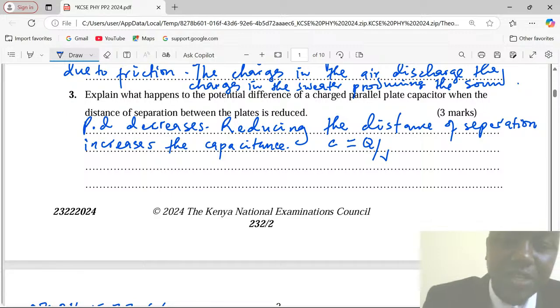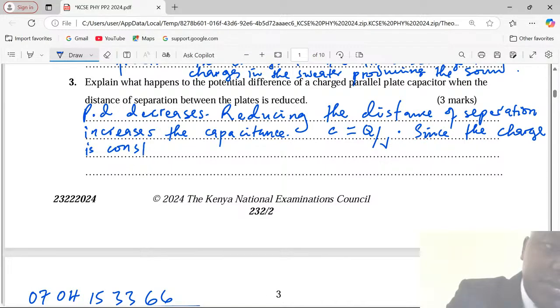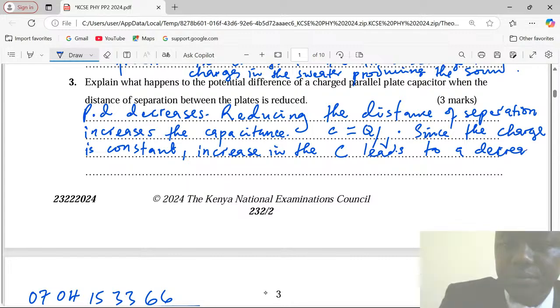From this equation it's good for us to notice that capacitance and potential difference are inversely proportional. Since the charge is constant, then increase in the capacitance leads to a decrease in the potential difference.